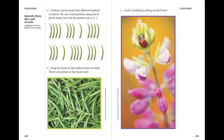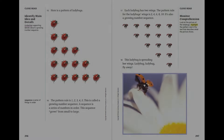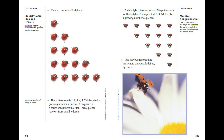Look — a ladybug is sitting on this flower! Here is a pattern of ladybugs. The pattern rule is one, two, three, four, five. This is called a growing number sequence. A sequence is a series of numbers in order, and this sequence grows from small to large. Each ladybug has two wings, so the pattern rule for the wings is two, four, six, eight, ten — also a growing number sequence. This ladybug is spreading her wings. Ladybug, ladybug, fly away!